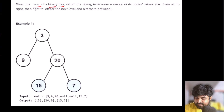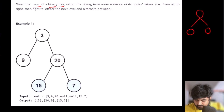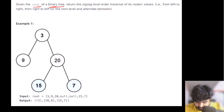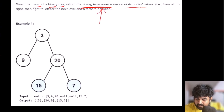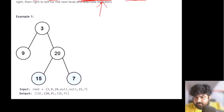In this problem we are given the root of a binary tree, which means any single parent can have at most two children. We need to return the zigzag level order traversal of the node values.